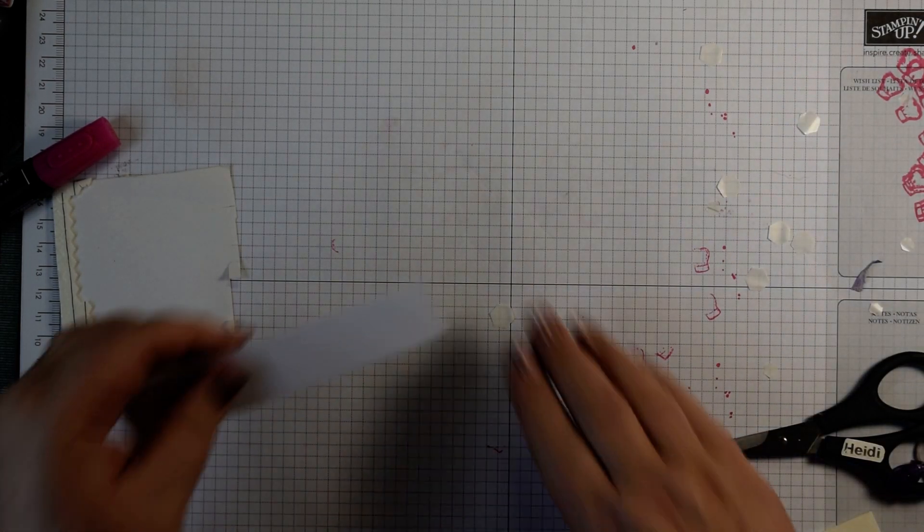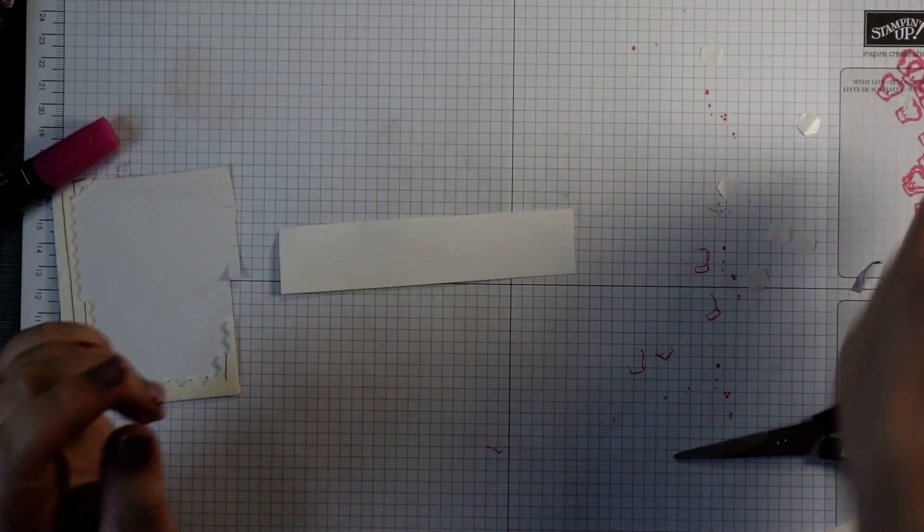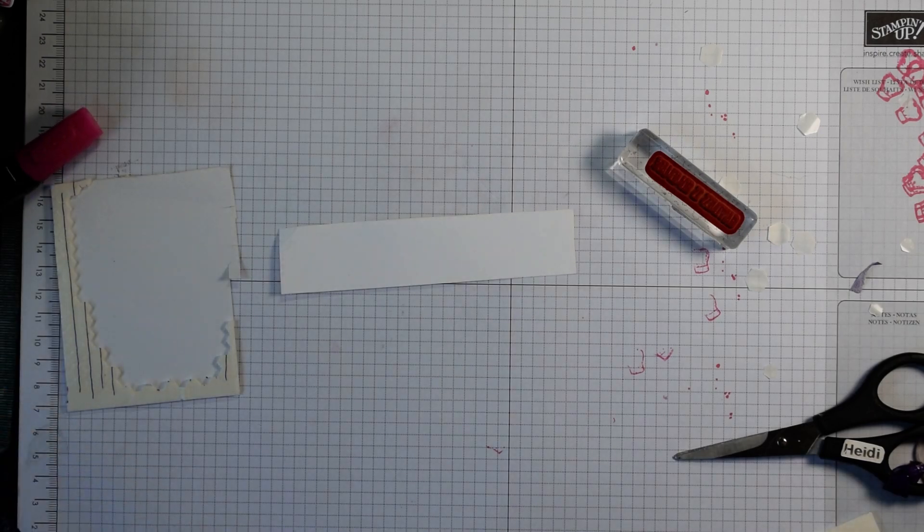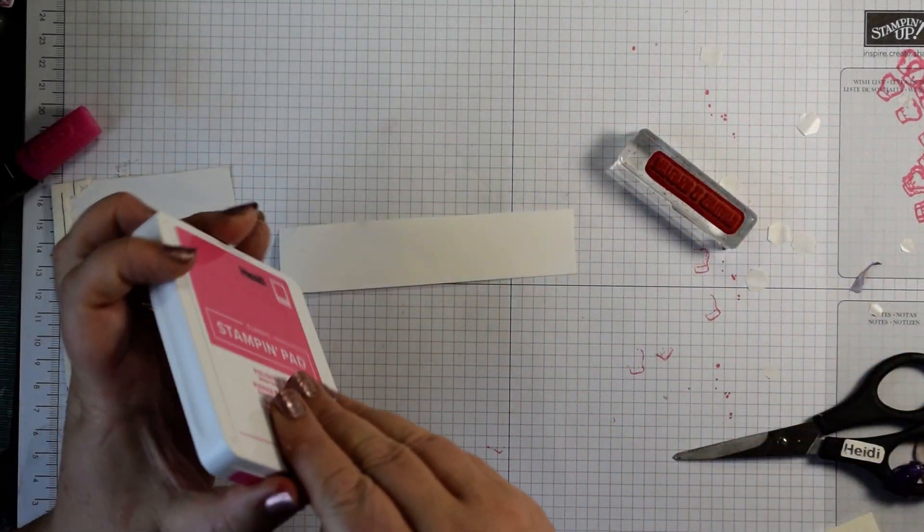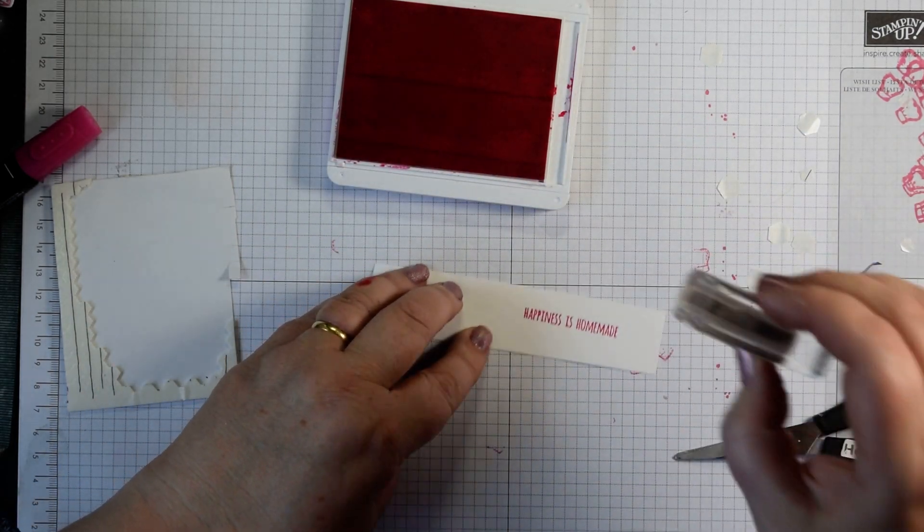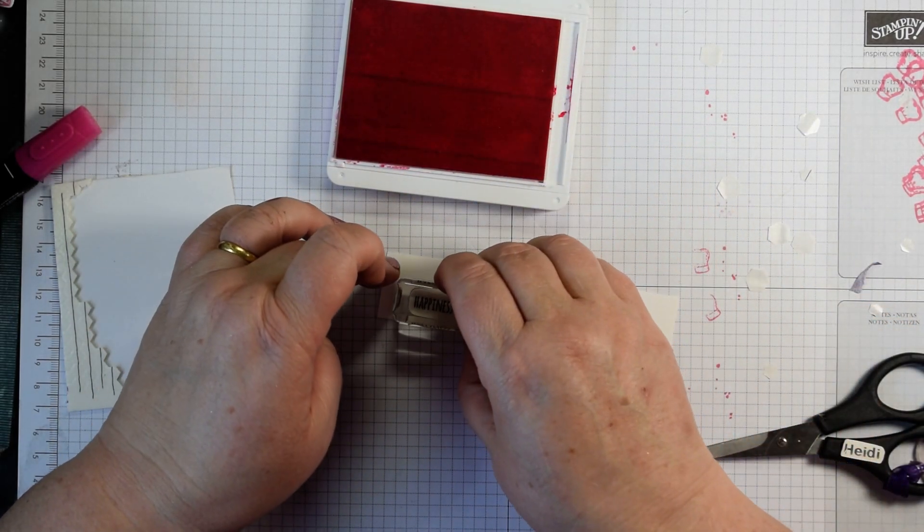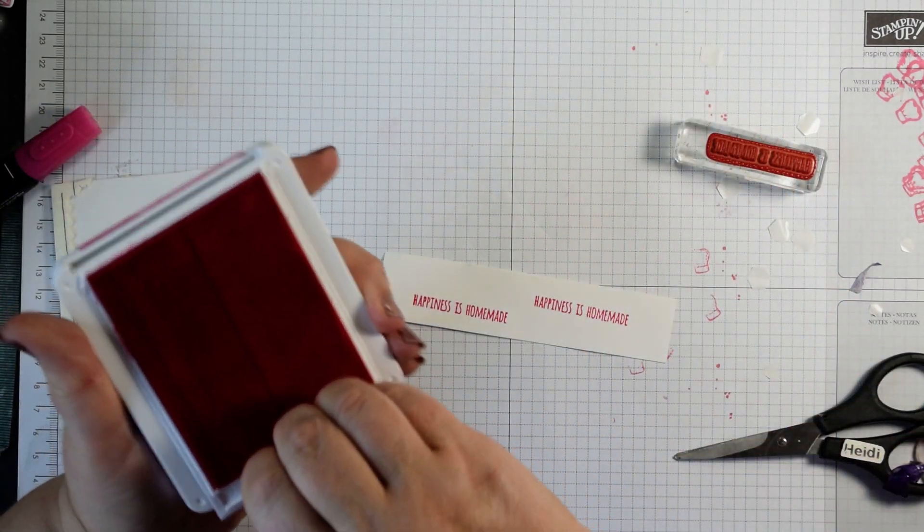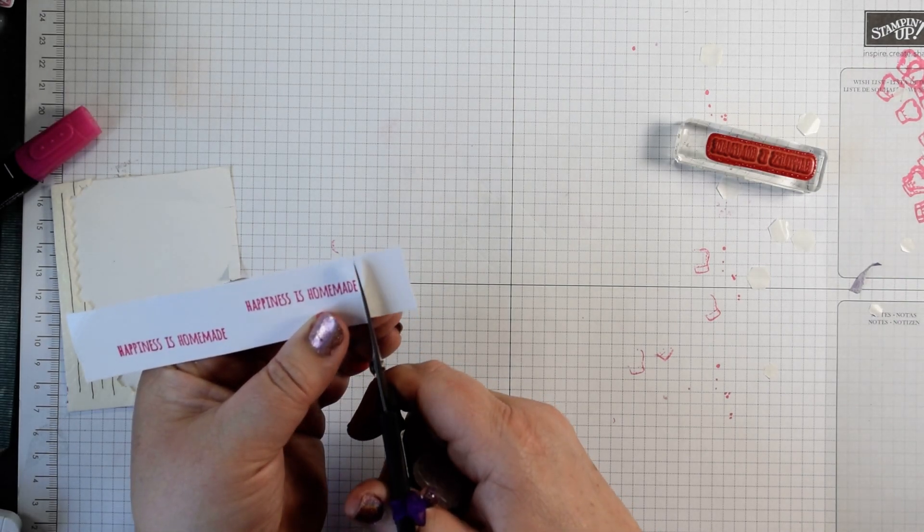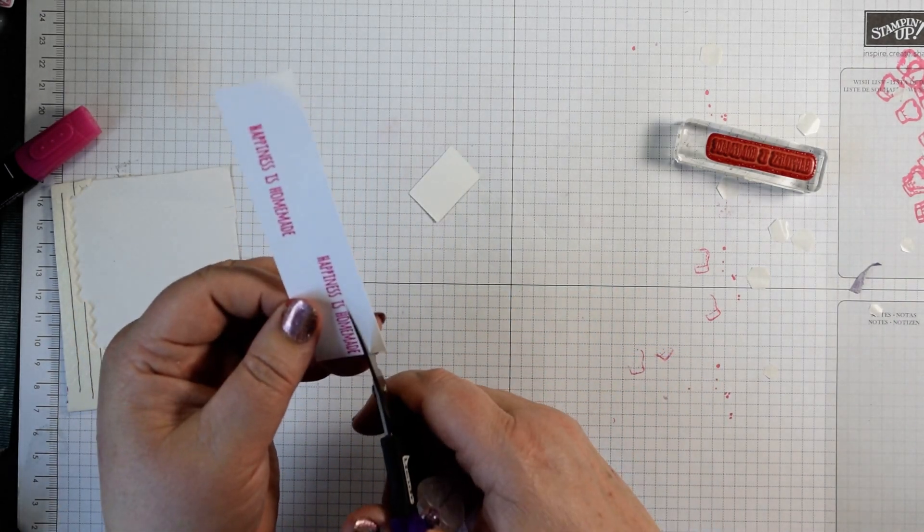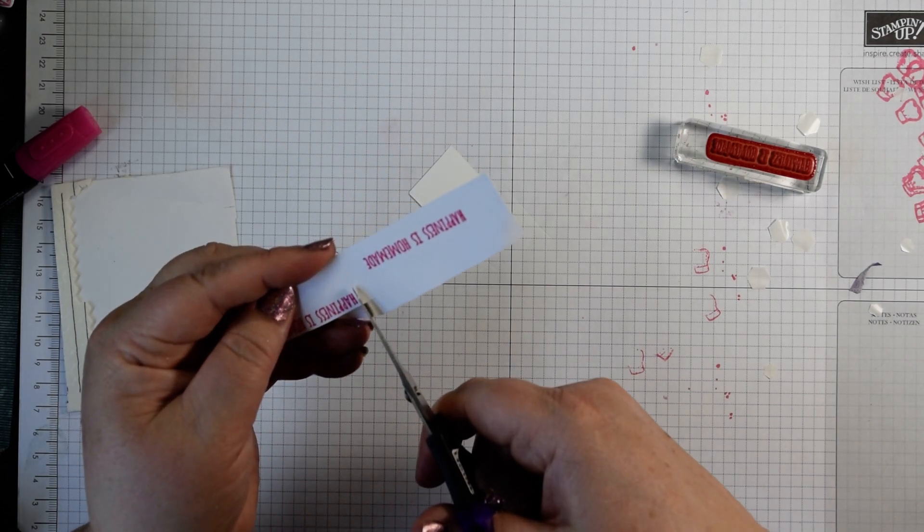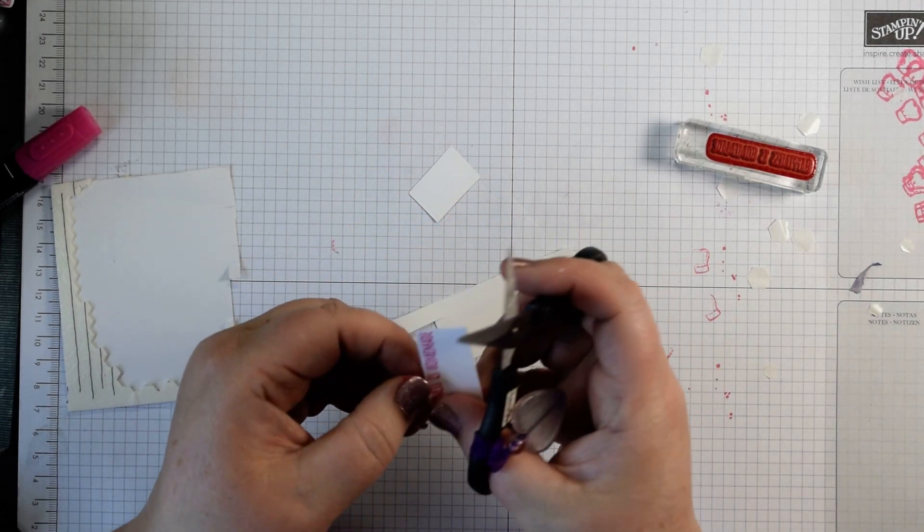Now all that's left is for us to do our sentiment. I have just got a scrap of basic white and again using that super juicy ink pad which I've for once put away. I'm just going to stamp that twice and the reason I'm stamping it twice is because when I cut the words out I like to leave a little bit of a border. So if I just cut out the whole phrase first, kind of get a reasonably even border.